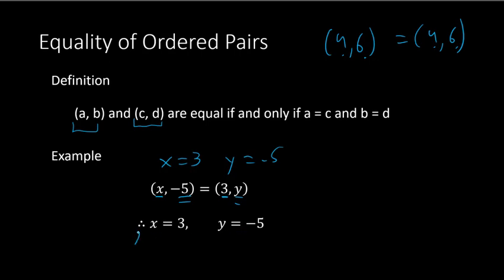This symbol with three dots means 'therefore.' So if these ordered pairs are equal, therefore x equals 3 and y equals negative 5.